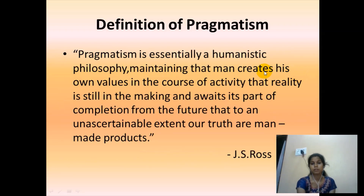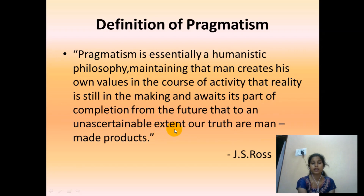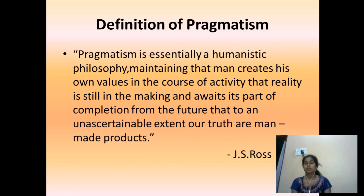Now when we come to the definition of pragmatism, this definition is given by J.S. Ross. According to him, 'Pragmatism is essentially a humanistic philosophy maintaining that man creates his own values in the course of activity, that reality is still in the making and awaits its part of completion from the future, that to an unacceptable extent our truths are man-made products.' So according to J.S. Ross, pragmatism is basically a humanistic philosophy — it focuses more on human beings, and man creates his own values through his activities.